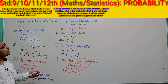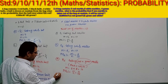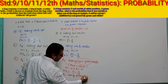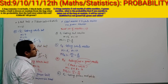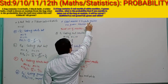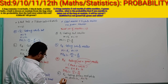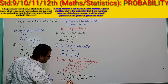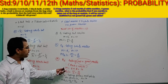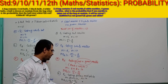D part: E4 = getting green and white marble. Number of green marbles = 4 and number of white marbles = 8, so M = 4 + 8 = 12, and N = 17. P of E4 = M by N = 12 by 17. The probability of getting a green or white marble is 12 by 17.